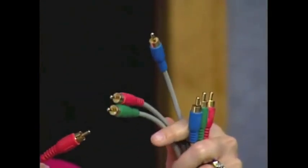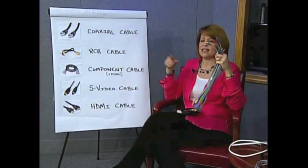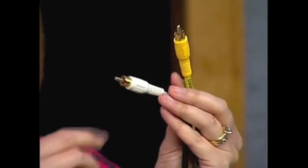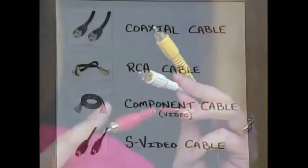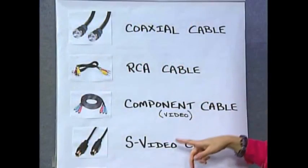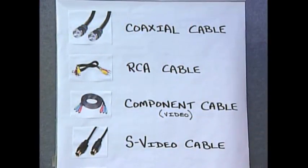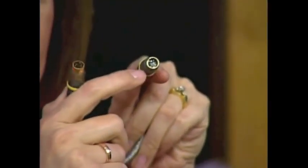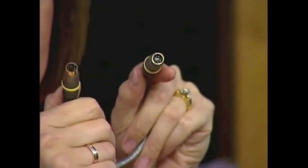Another cable that looks similar but in different colors is a component video cable. The ends look a lot like our RCA cables, but the colors are completely different — these generally come in blue, red, and green. Just like the name implies, component video cables carry only video. If you're using a component video cable you'll also have to have some other type of cable carrying audio. This is a better quality video than you'll get from an RCA cable.